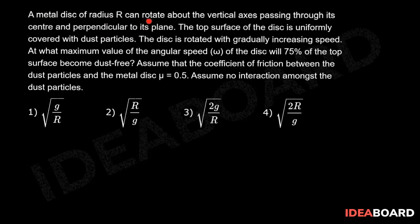A metal disc of radius capital R can rotate about the vertical axis passing through its center and perpendicular to its plane. The top surface of the disc is uniformly covered with dust particles. The disc is rotated with gradually increasing speed.